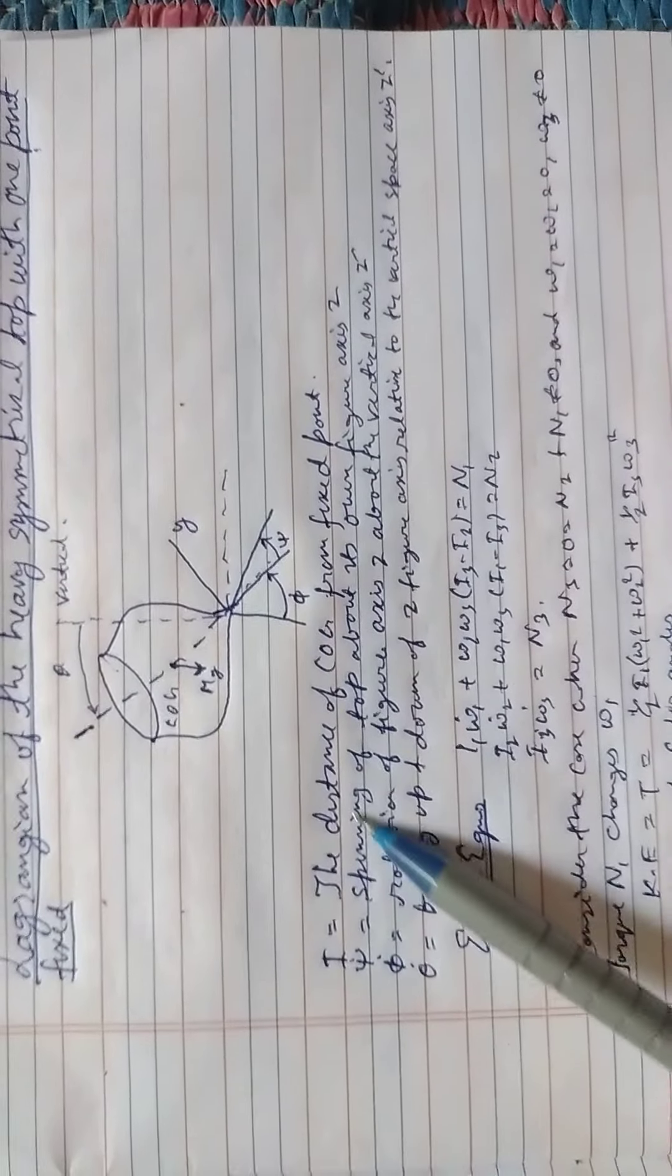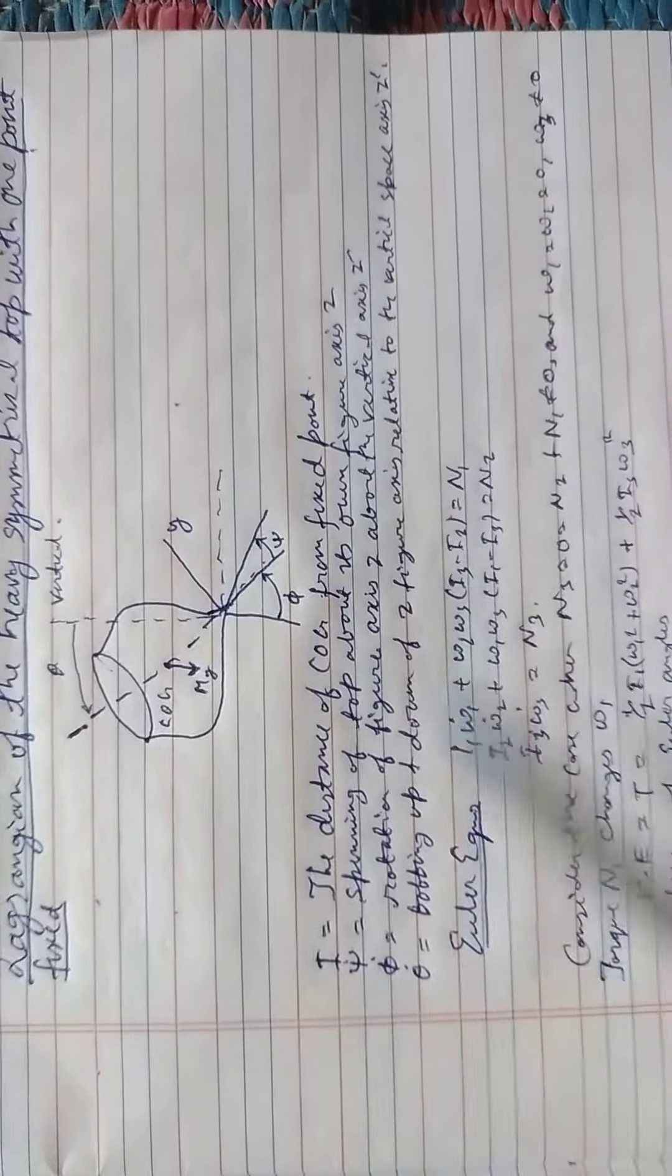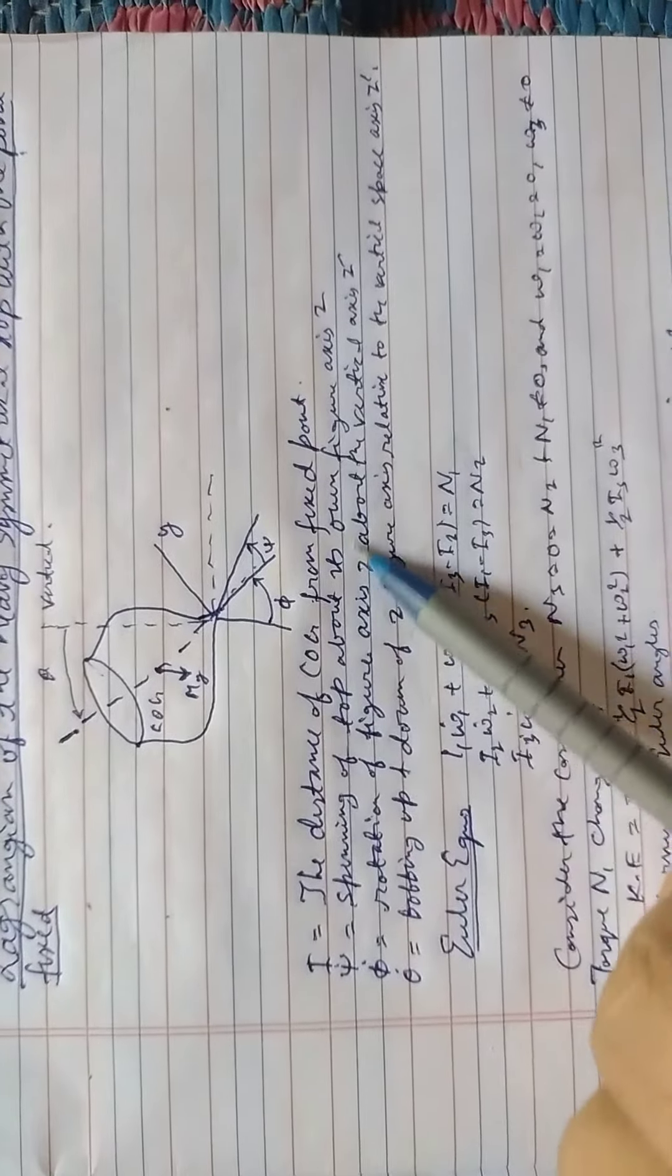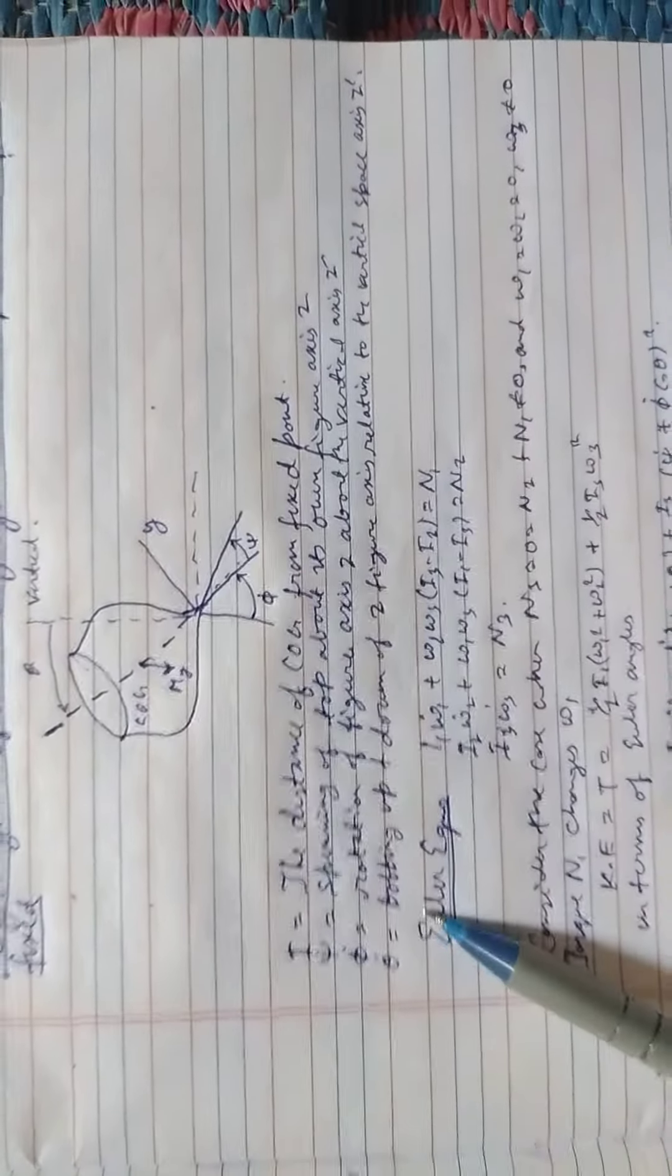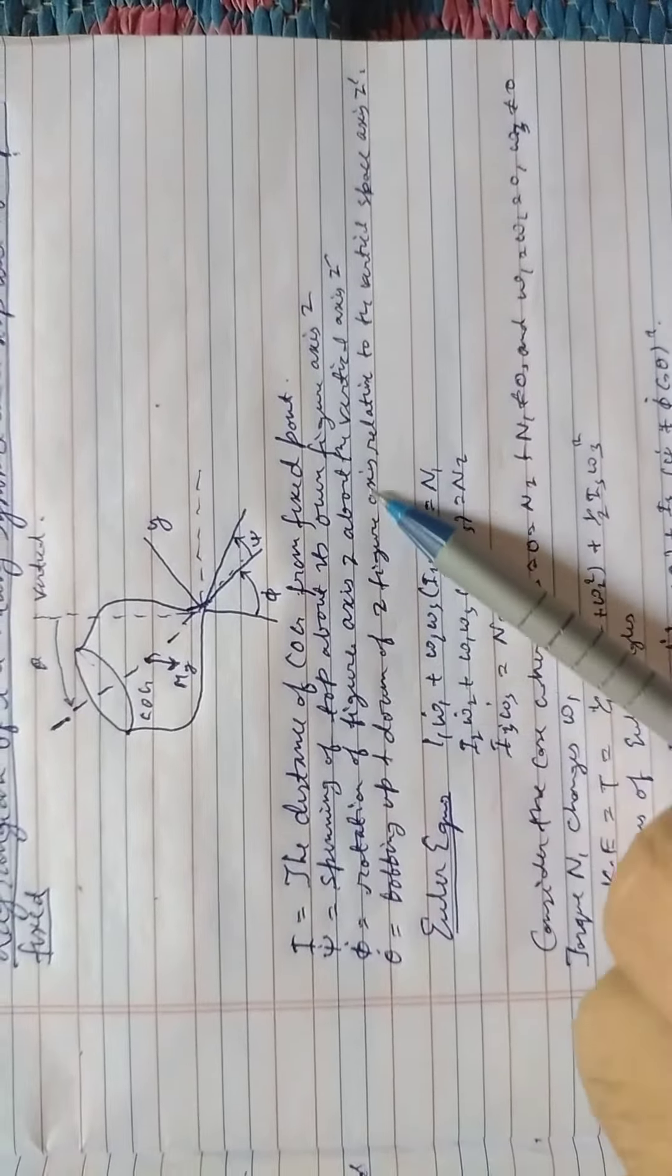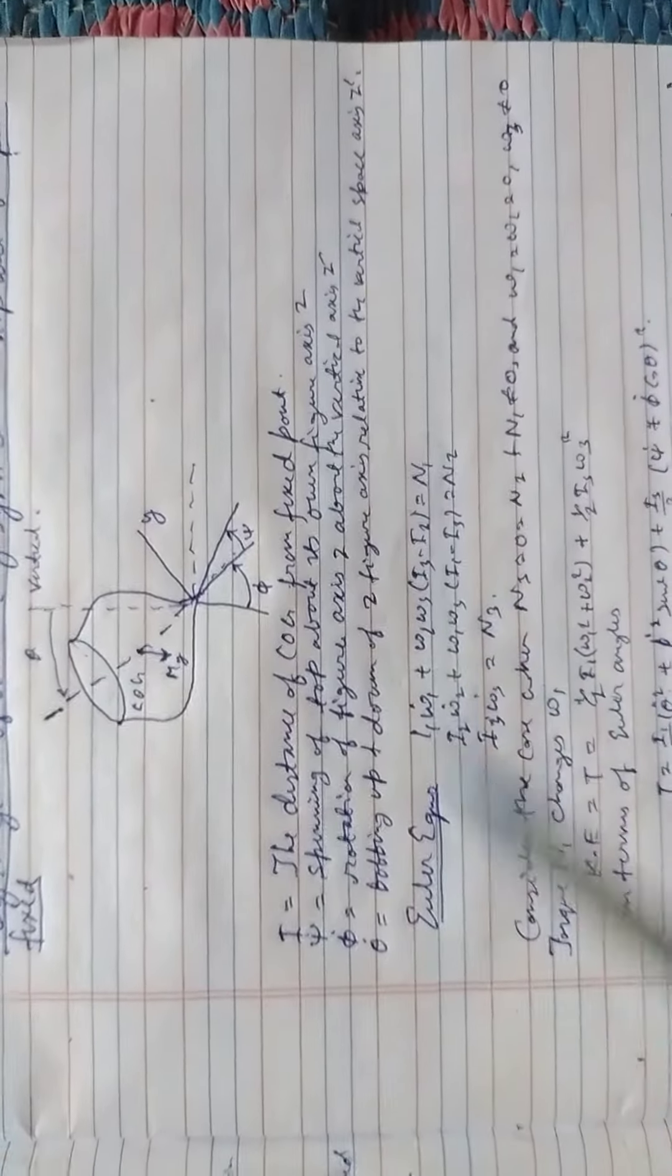Psi dot is equal to spinning of top about its own figure axis Z. Phi dot is equal to rotation of figure axis Z about the vertical axis Z naught. Theta dot is equal to bobbing up and down of Z figure axis relative to the vertical space axis Z naught.